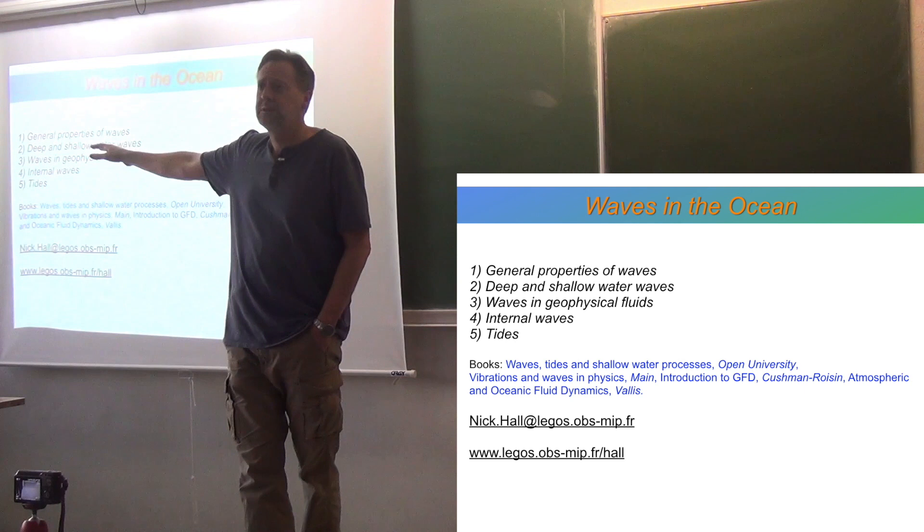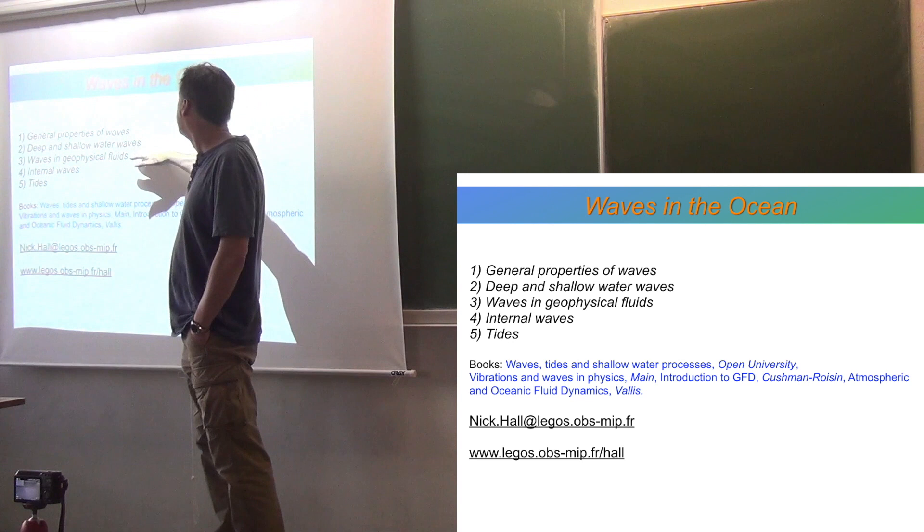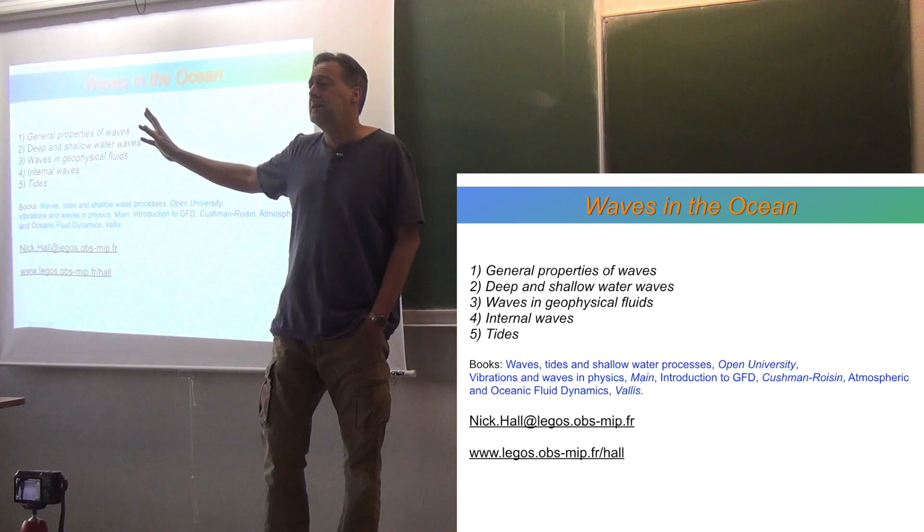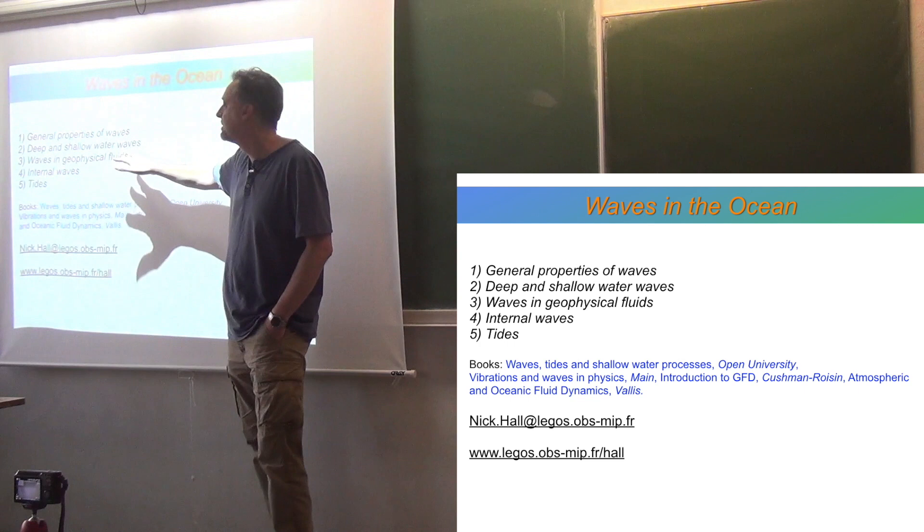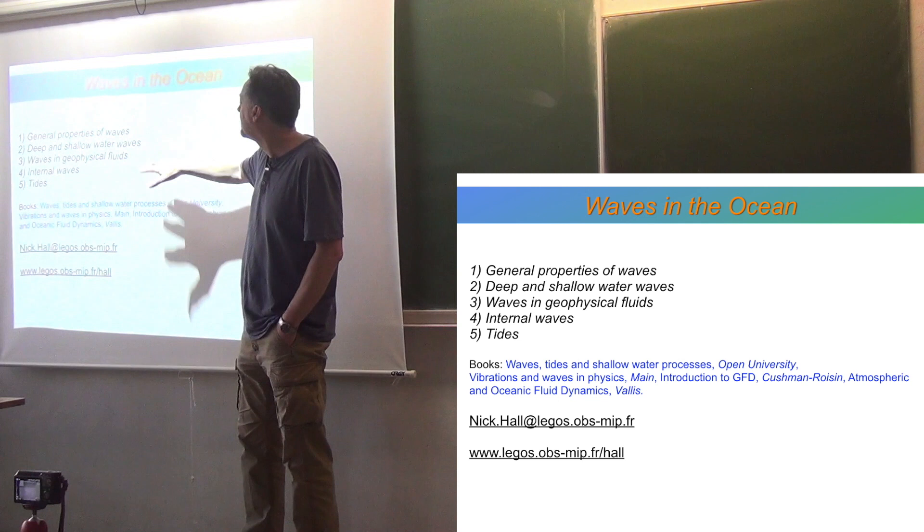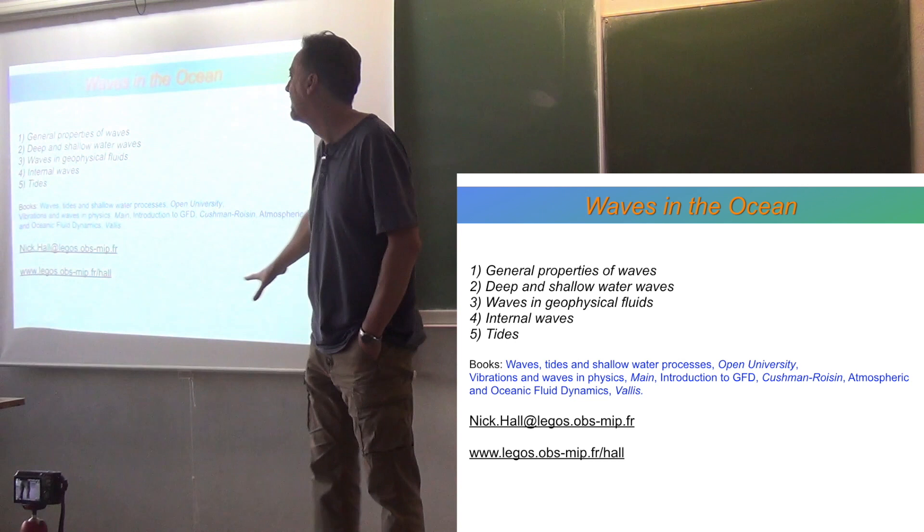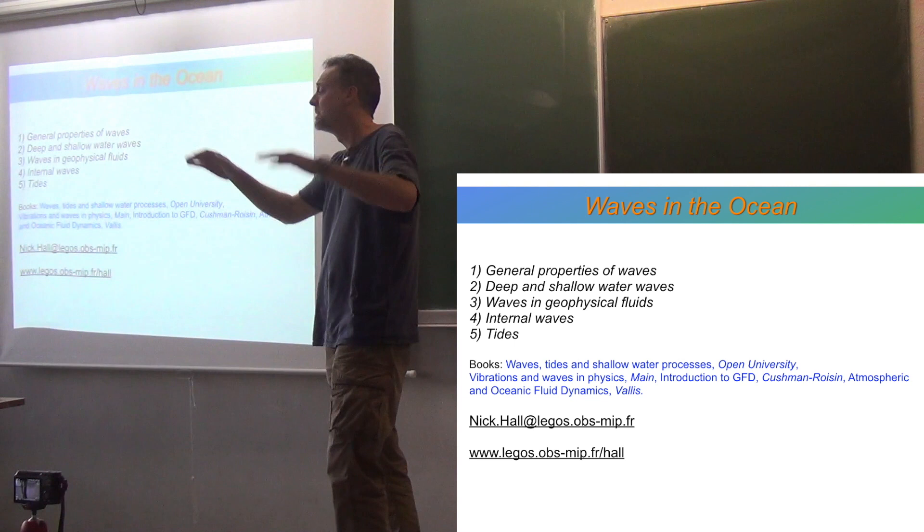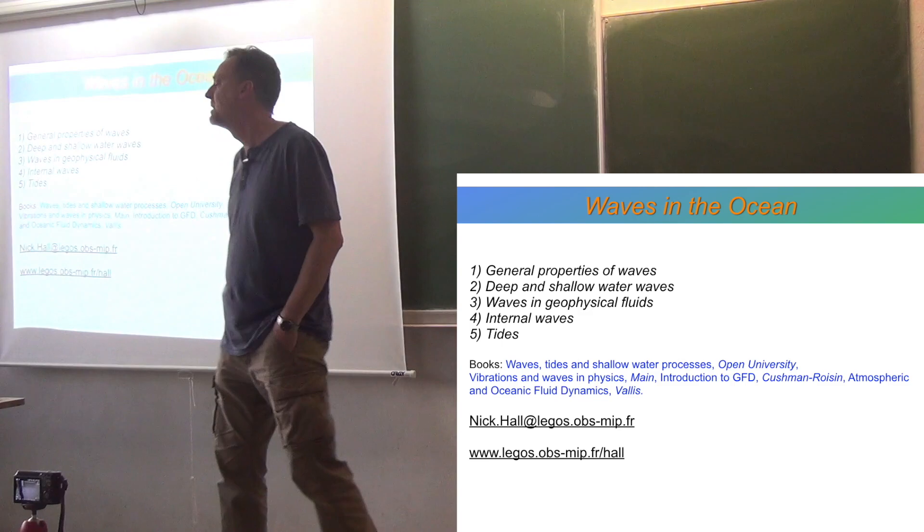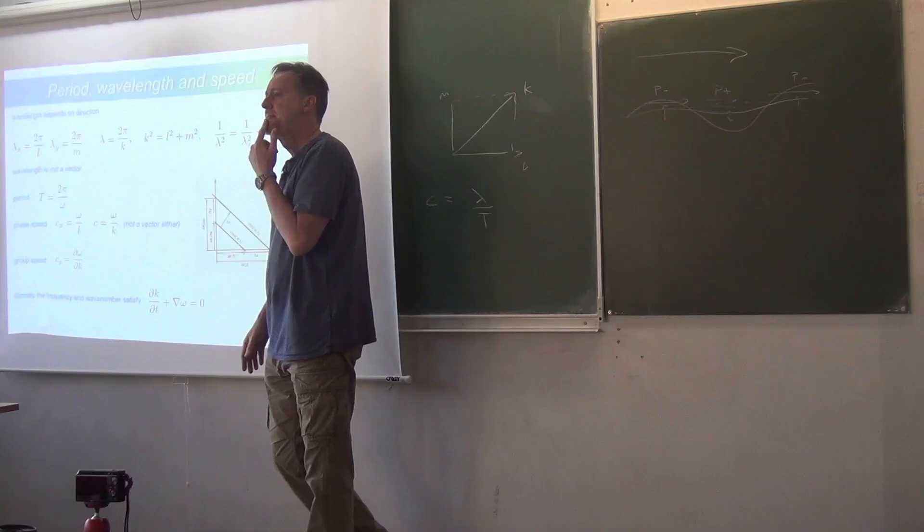And this is all surface waves. It's surface gravity waves. And then we're going to move on to geophysical fluids. So, what does that mean? What do I mean by geophysical fluids? I mean fluids where the rotation of the Earth becomes important. So, how does the rotation of the Earth affect these waves? And then after that, after we've considered that a bit, we'll go back to the smaller scales and we'll look at waves below the surface. So, internal waves are waves which exist in the body of the fluid, not just at the surface. And then finally, we'll have a look at tides. Tides is the last thing I do.